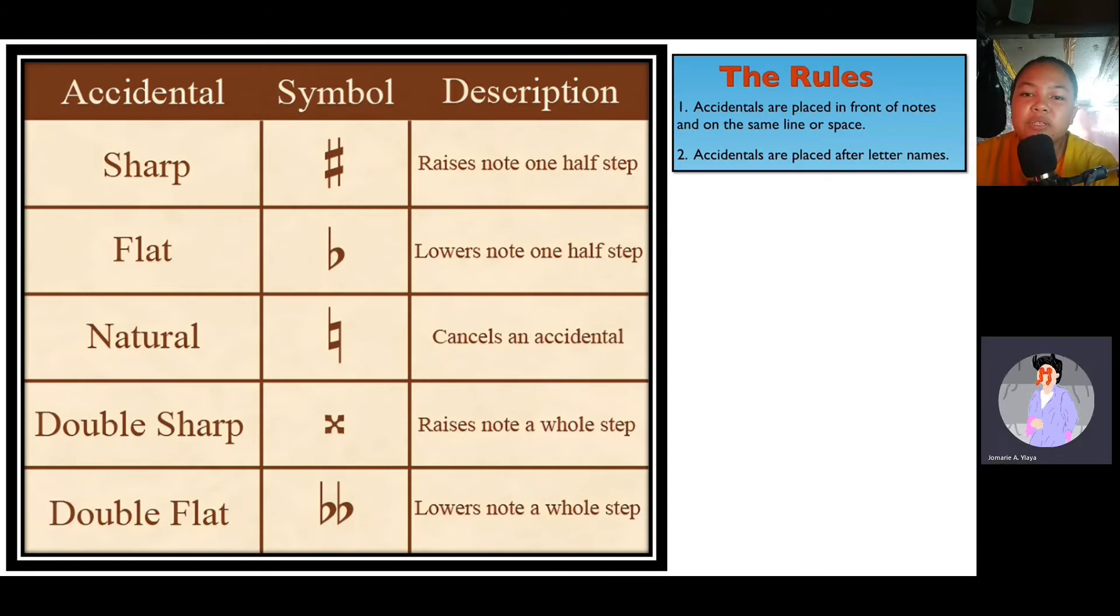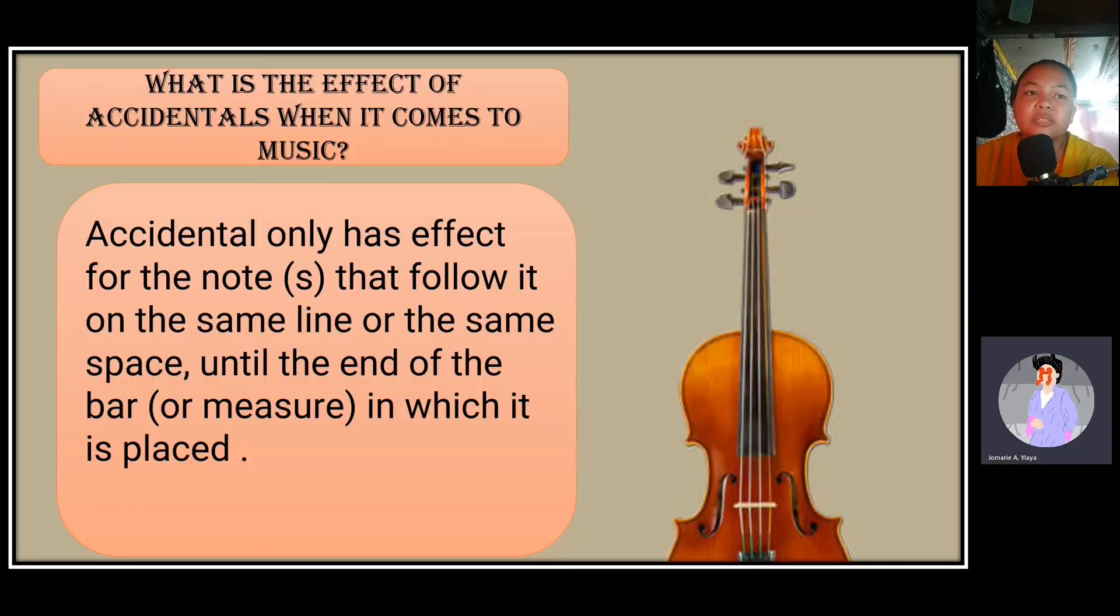So, what is this again? This one. Sharp. This one. Double sharp. This one. Flat. And the two letter B. Double flat. This one. Natural flat. Very good students. Next. So, here are the types of accidentals, symbols, accidentals, and the description. First sharp: Raises note one half step. The flat: Lowers note one half step. Natural: Cancels an accidental. Double sharp: Raises note a whole step. Double flat: Lowers note a whole step.